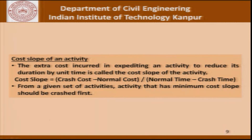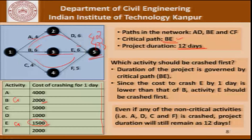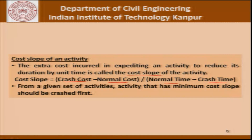Now let us formally define what is called the cost slope of an activity. The extra cost in expediting an activity to reduce its duration by unit time is called the cost slope of that activity. That is given by: crash cost minus normal cost, divided by normal time minus crash time. In the previous table, what was given as cost of crashing for one day was essentially the cost slope of all those activities — the cost incurred for crashing that activity by a single day.